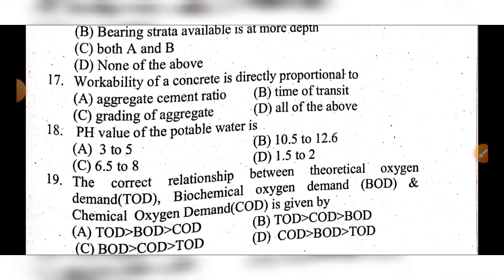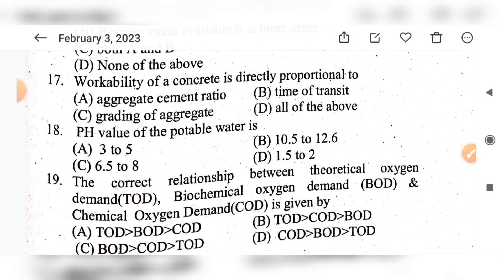Question 19: The correct relationship between theoretical oxygen demand (TOD), biological oxygen demand (BOD), and chemical oxygen demand (COD) is — option A: TOD > BOD > COD, option B: TOD > COD > BOD, option C: BOD > COD > TOD. The answer is option B: TOD > COD > BOD.